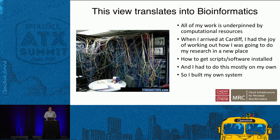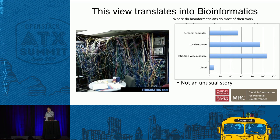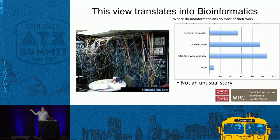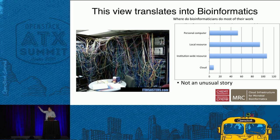I did what most academics do: I built my own system. When we put in grants we're putting in money for a server, and because of how budgeting works that budget line is mine — so instead of handing money off to central university IT, I buy my own server. This isn't unusual. Last autumn Nick Loman and I did a Twitter survey asking bioinformaticians where they did the majority of their work. Over half did their work either on a local resource — a server in a cupboard — or on a personal computer. The cloud is almost completely unutilized. The way bioinformatics is done is not really reproducible and not easily shareable.